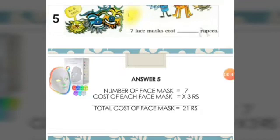5th sum: the cost of each face mask is 3 rupees. What will be the cost of 7 such face masks? The number of face masks is 7 and the cost of each face mask is 3 rupees.